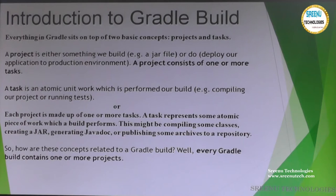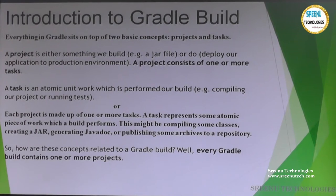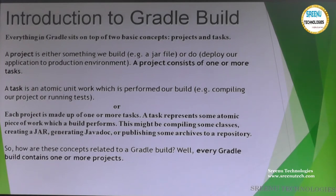A task is an atomic unit of work which our build performs. Examples include compiling and running test cases. Another definition: each project is made up of one or more tasks, where a task represents some atomic piece of work. For a Java application this might be compiling classes, creating a JAR, generating documentation, and publishing artifacts to a repository.